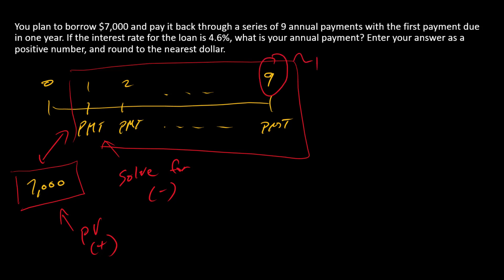There are nine of these payments, so that's going to be the N, and then the interest rate for the loan is 4.6%. So I'm going to enter I as 4.6. Remember, the financial calculator likes interest rates to come as percent, not as decimal.